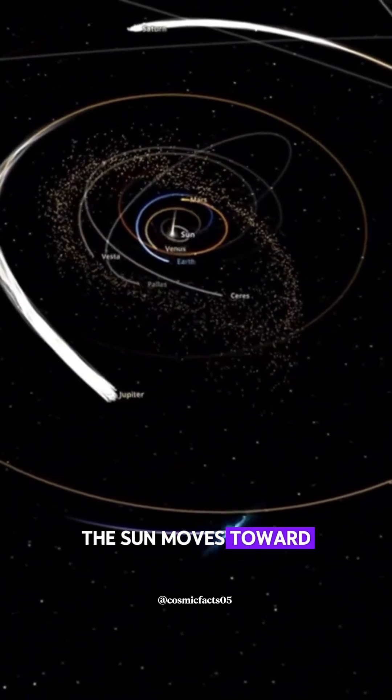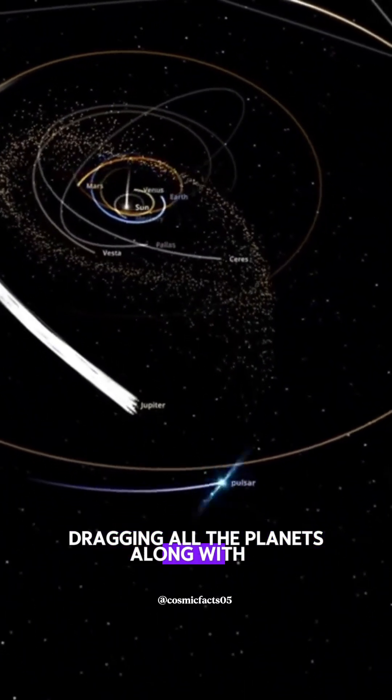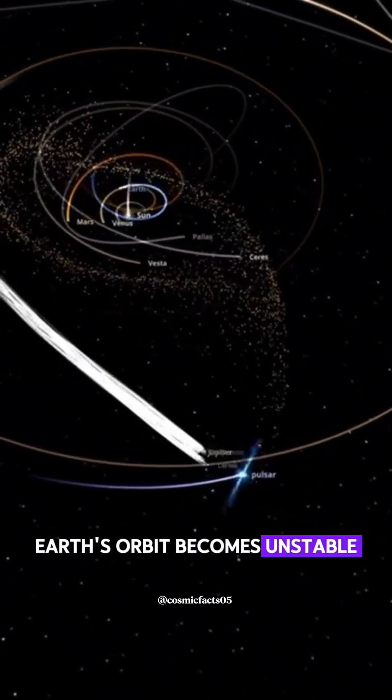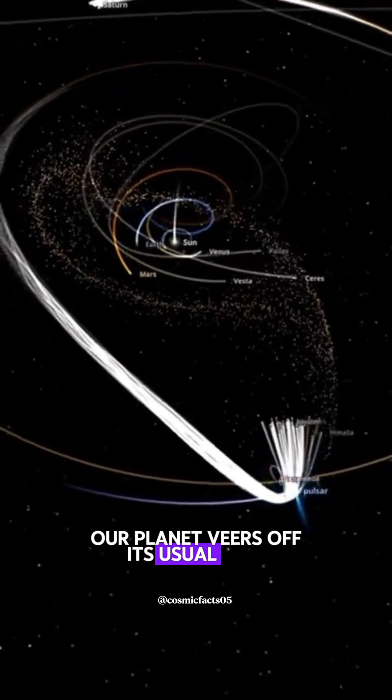The sun moves toward the pulsar, dragging all the planets along with it. Earth's orbit becomes unstable. Our planet veers off its usual path.